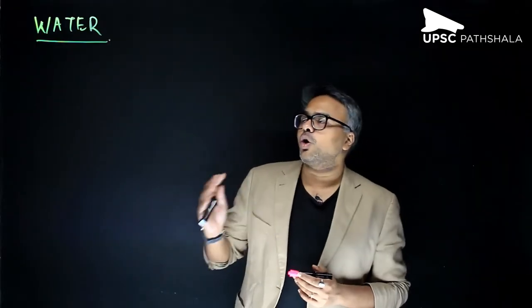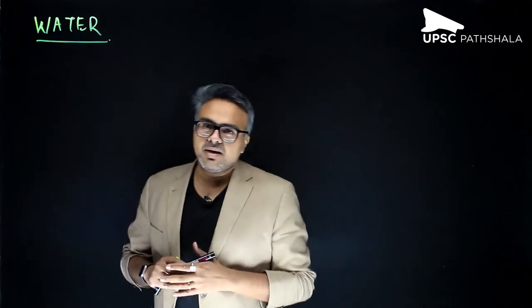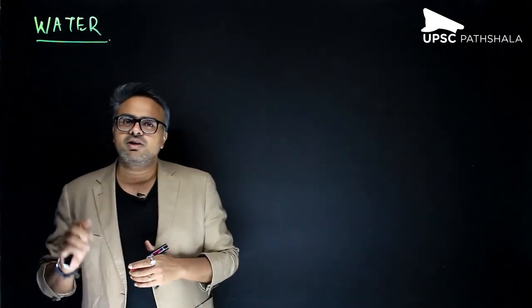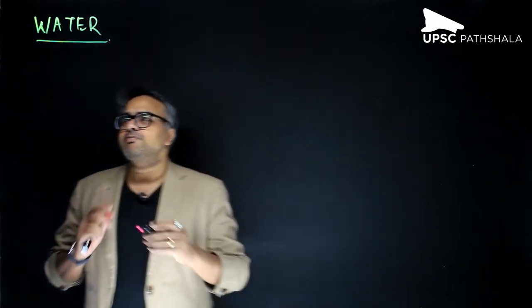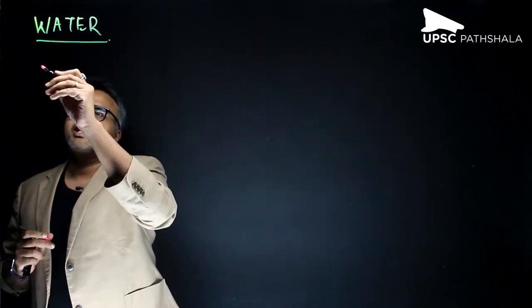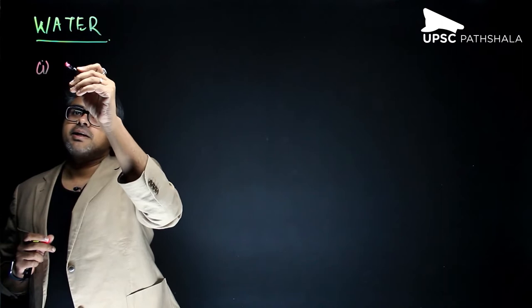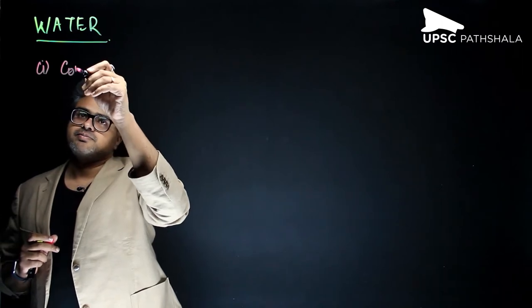Today we are going to talk about the various parts — the four important parts of the ocean relief that we spoke about previously. The first part we are going to talk about is the continental shelf.